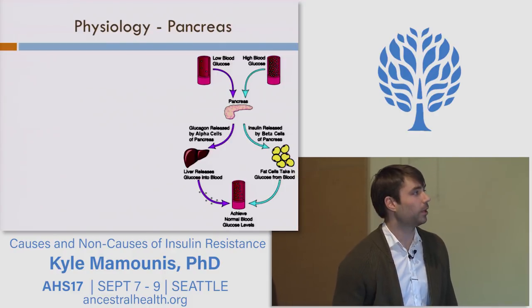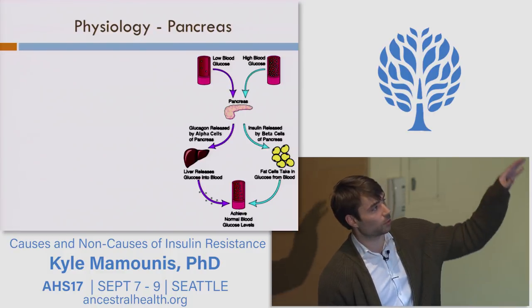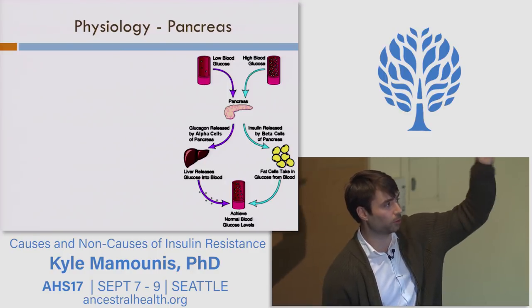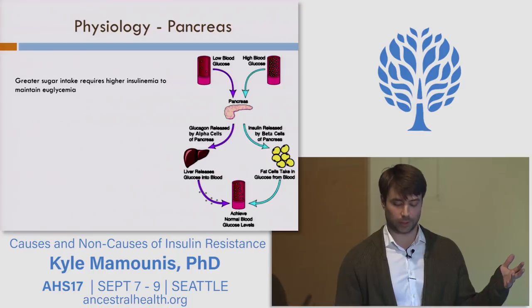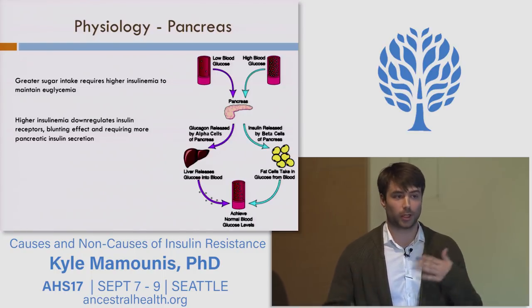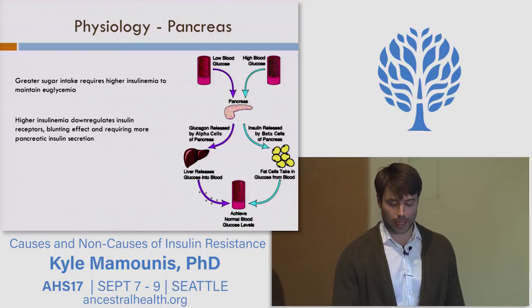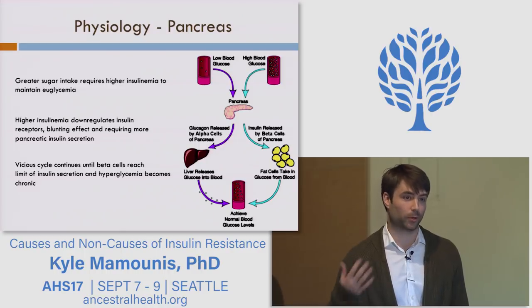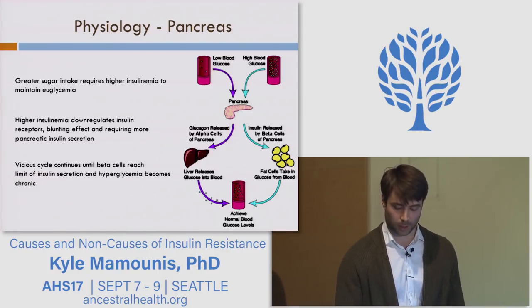That's the epidemiology flyover picture. The diabetes rate has gone up, which I'll use as a proxy for insulin resistance. At the level of physiology, here's the pancreas glucose metabolism and insulin-glucagon regulation double-loop model. If you have greater sugar intake, you need higher insulinemia to maintain euglycemia — a simple mechanism. If you have chronically higher insulinemia, you downregulate the insulin receptor through negative feedback, and the pancreas works harder and harder until it can't work anymore — that's where uncontrolled diabetes begins.